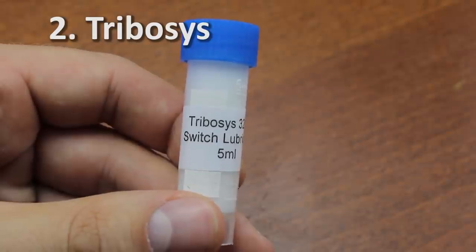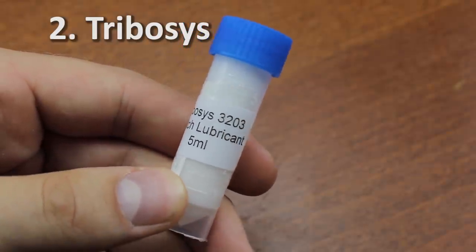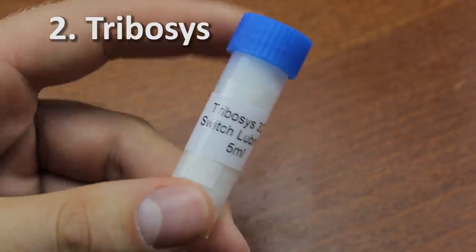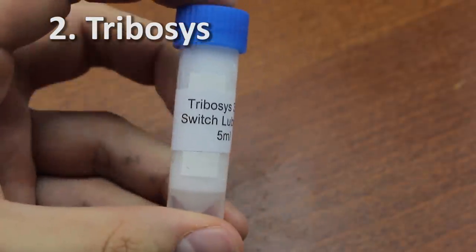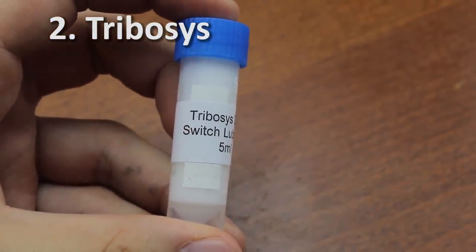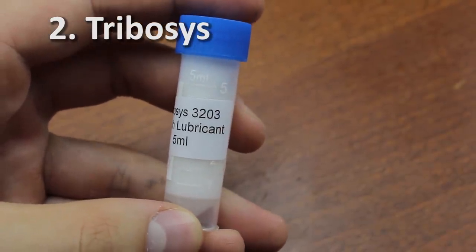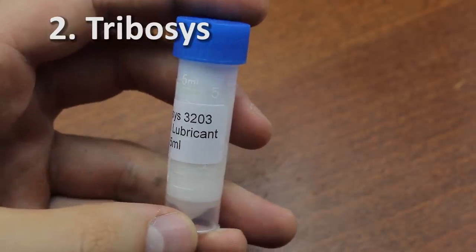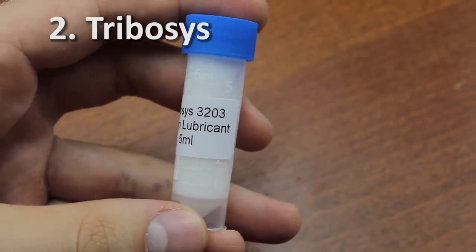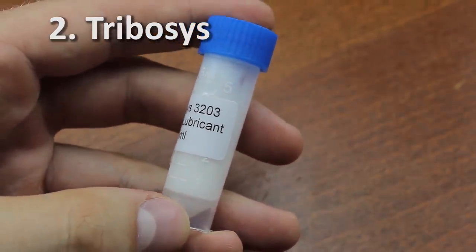Tribosis is a similar perfluoropolyether compound designed by Miller-Stefensen as a Krytox equivalent, except it uses a binder to hold the mixture together better. It's in a similar price range and available in two formulations: 3203 and 3204. The latter is meant for linear switches while the former one is more suited to tactiles. This one here is 3203.